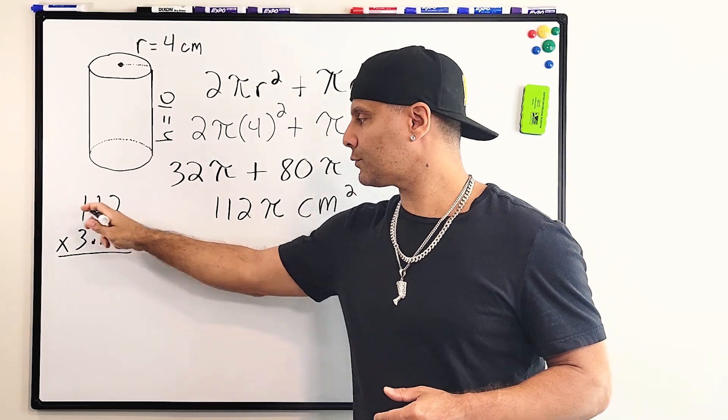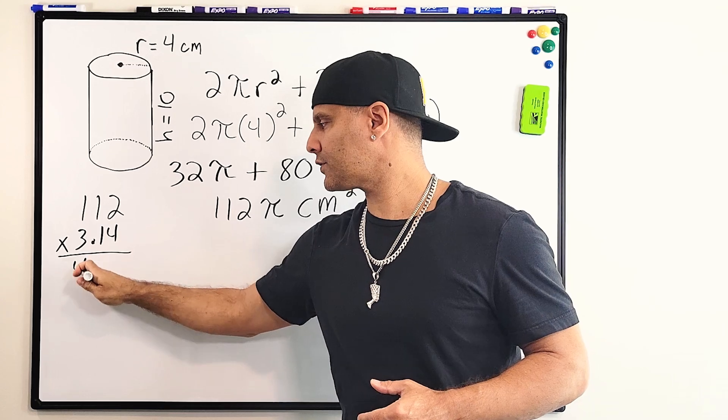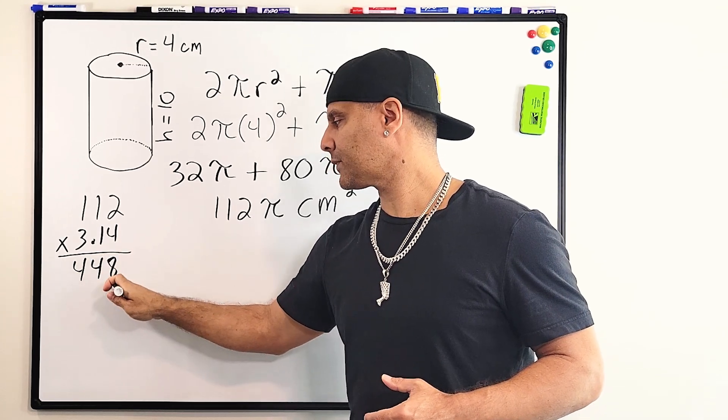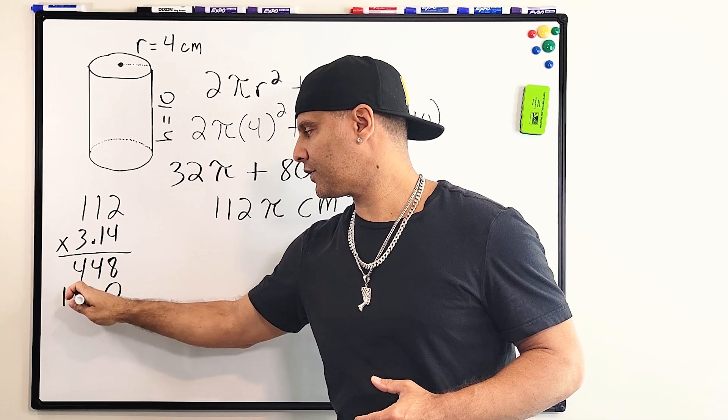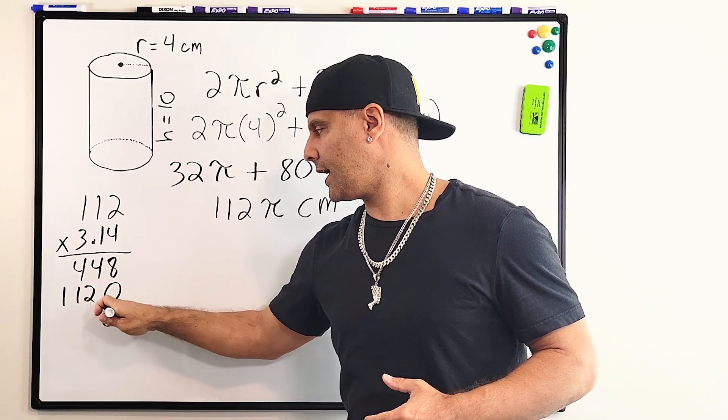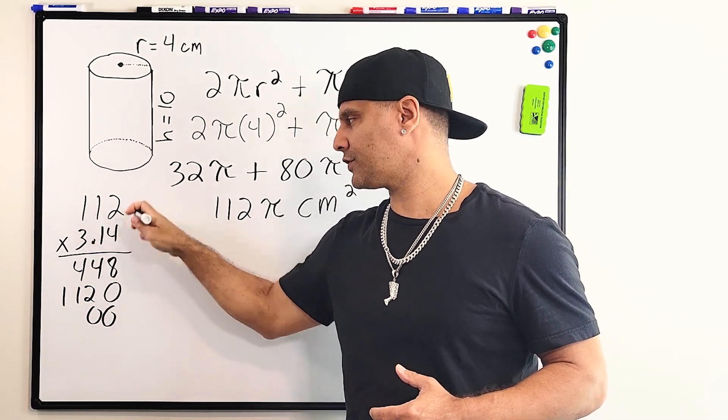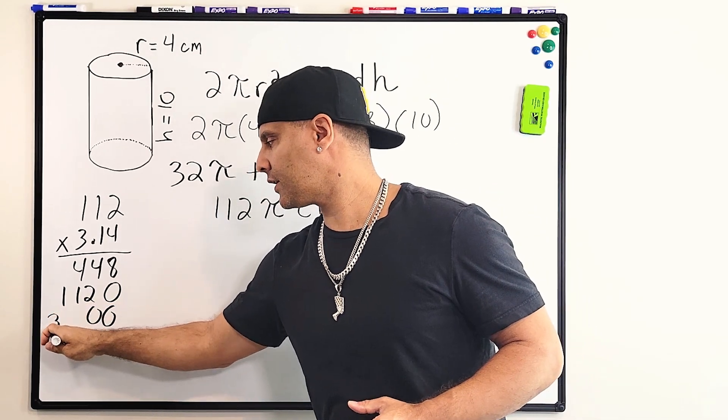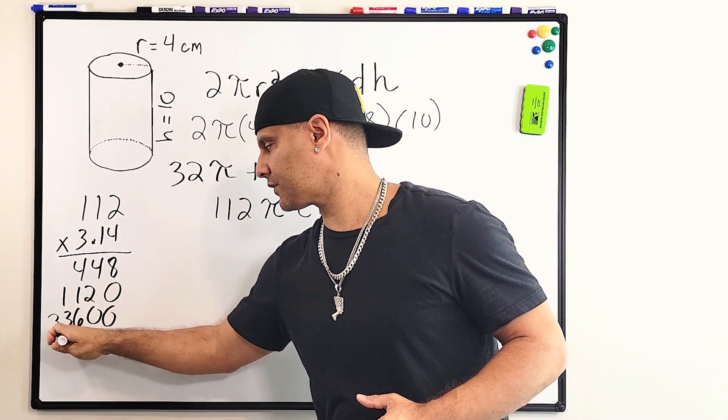Alright, 4 times 112 is 448. Alright, 1 times 112, of course, is 112. And three sets of 112 would be 336.